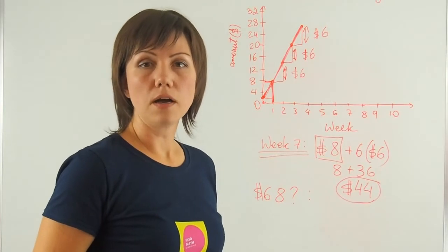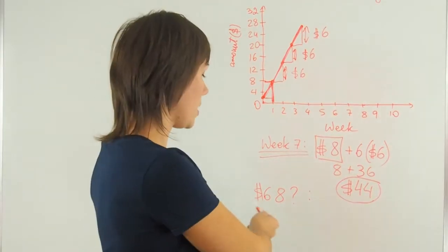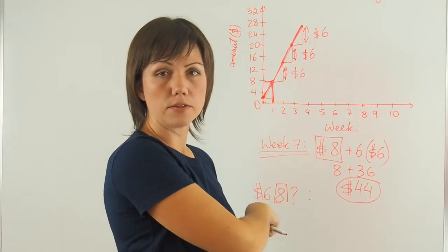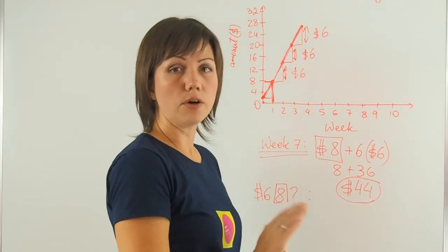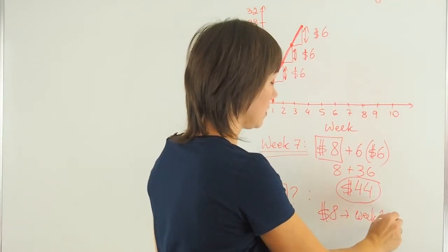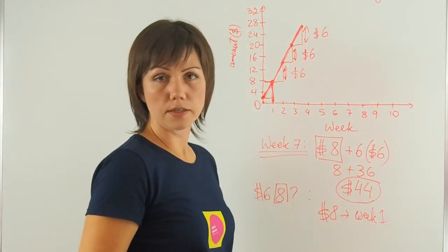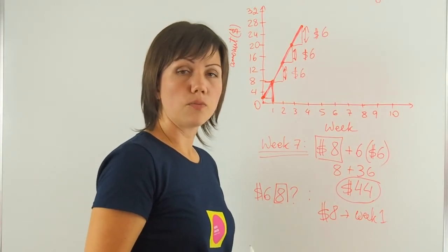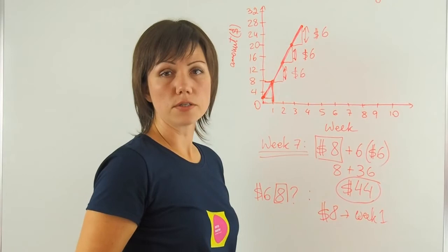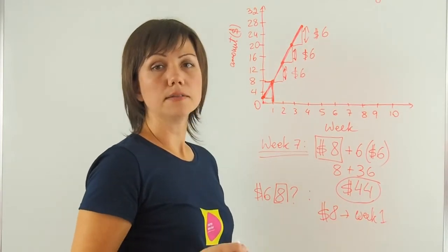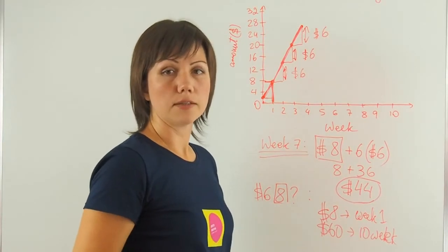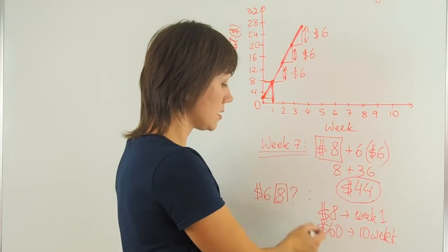Now we need to figure out how many weeks it will take Joe to save up 68 dollars in total. I know that on the first week he saves eight dollars. So I'll remove this eight and know that that is my first week. So eight dollars, that's week one. That leaves me with 60 more dollars that he needs to save. So how many weeks will it take him to save up 60 dollars? Since each week he's saving six dollars to get to 60, I need to multiply it by 10. So in order to save 60 more dollars, he needs to save up for 10 weeks. So together, this is 11 weeks, which is eight dollars and 60 dollars.